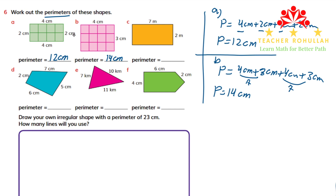The unit for perimeter is always a unit of length—whether it is centimeters, meters, inches, or any other unit of length. For shape C, which is a rectangle, we have the unit of meters, not centimeters. To find the perimeter for shape C, we follow the same method: P equals seven meters plus two meters plus seven meters plus two meters. Seven plus seven is fourteen, and two plus two is four. Fourteen plus four is 18 meters. So the perimeter for shape C is 18 meters.